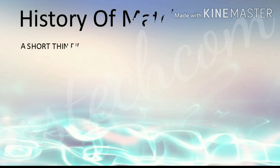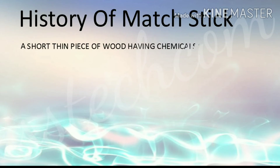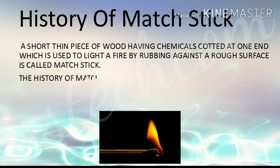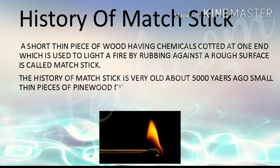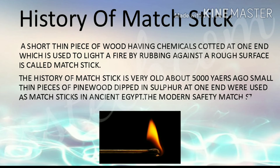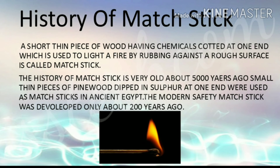History of Matchstick: A short thin piece of wood having chemicals coated at one end, which is used to light a fire by rubbing against a rough surface, is called a matchstick. The history of matchsticks is very old — about 5000 years ago, small thin pieces of pine wood dipped in sulphur at one end were used as matchsticks in ancient Egypt. The modern safety matchstick was developed only about 200 years ago.